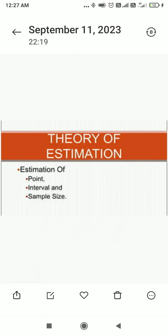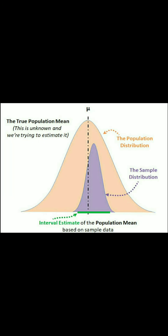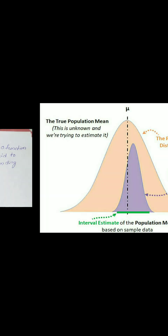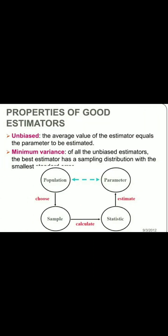In point estimation, we have some good estimators. The good estimators are: the first one is unbiased, the second one is consistency, the third one is efficiency, and the fourth one is sufficient estimators.